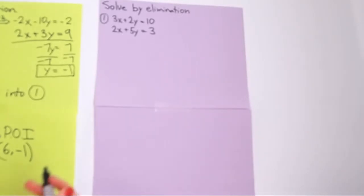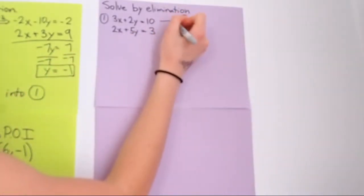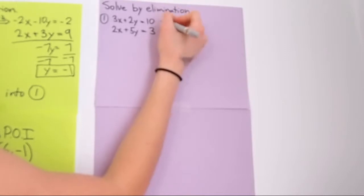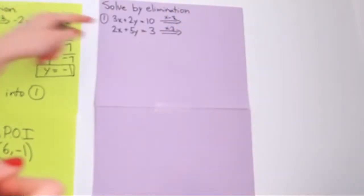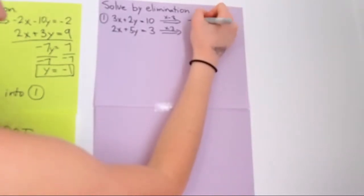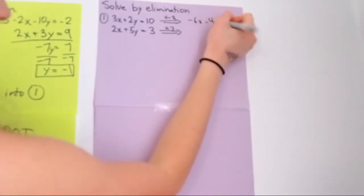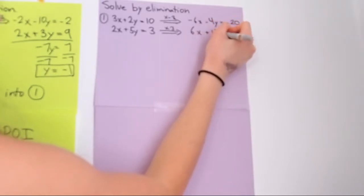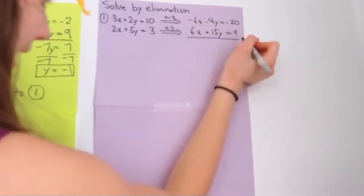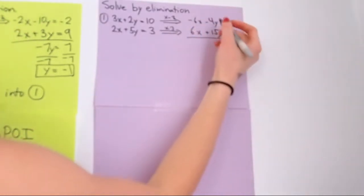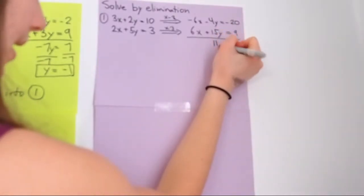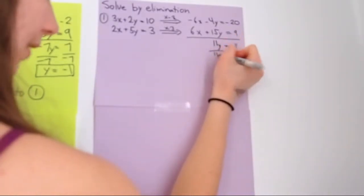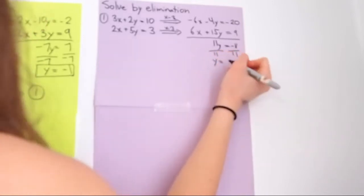Now we have to do the same thing but times both equations by something. We times this equation by negative 2 and this equation by 3 — this way we will eliminate the x variables. So this equals negative 6x minus 4y equals negative 20. And this one is 6x plus 15y equals 9. Add these up — the x terms equal 0, so you don't write it down. Negative 4y plus 15y equals 11y. Negative 20 plus 9 equals negative 11. Divide both sides by 11 — you get y equals negative 1.